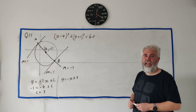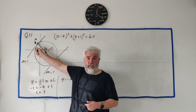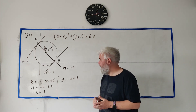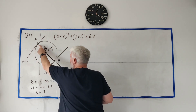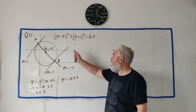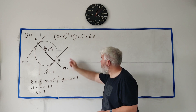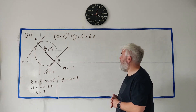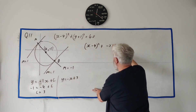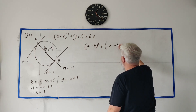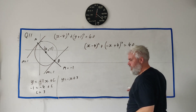For part b, find the coordinates of A, where each coordinate is in surd form. We have the equation of line AB which passes through A, and the equation of the circle which also passes through A. The trick is to substitute the line equation into the circle equation. Replacing y with (-x + 3), we get: (x - 4)² + (-x + 3 + 1)² = 40.